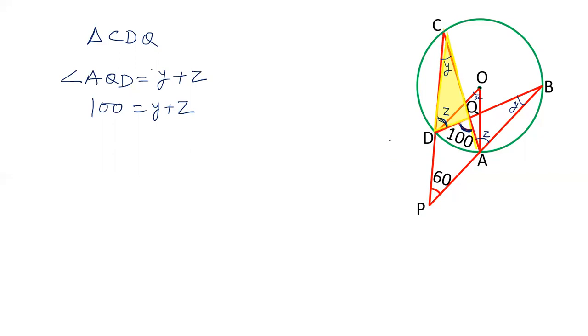Now let's take another triangle, this triangle APC. In this triangle, CA is extended to B and this is angle Z. Angle CAB is equal to the sum of interior opposite angles Y plus 60, which is angle P plus angle C.